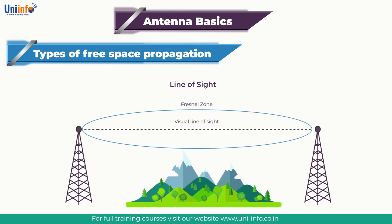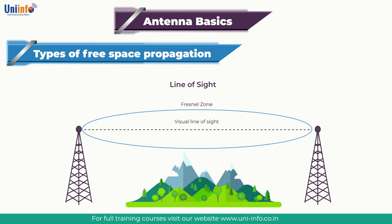When considering line-of-sight (LOS) propagation, it may be necessary to consider the curvature of the Earth. The curvature of the Earth is a fundamental geometric limit on LOS propagation. In particular, if the distance between the transmitter and the receiver is large compared to the height of the antenna, then an LOS may not exist. The simplest model is to treat the Earth as a sphere with a radius equivalent to the equatorial radius of the Earth.